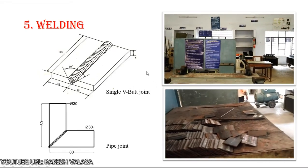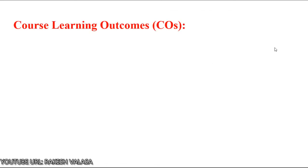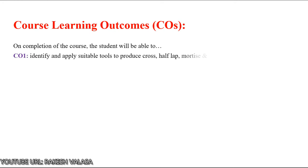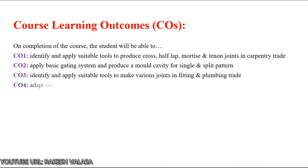This is all about the introduction to the Workshop Technology Practice Laboratory. Upon completion of this lab, the student will be able to perform particular jobs — for example, identify and apply suitable tools to produce a cross half-lap joint in carpentry, prepare a basic gating system in foundry, make various joints in fitting and plumbing, and adapt a suitable welding process to build joints in the welding trade. Thank you one and all.